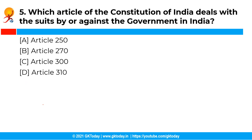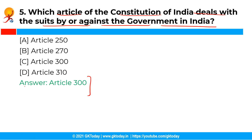The next question is: which article of the Constitution of India deals with suits by or against the government of India? The correct answer is option C, that is Article 300. Article 300 of the Constitution deals with suits by or against the government of India, and states that the government of India may sue or be sued by the name of the Union of India, and the government of a state may sue or be sued by the name of the state.